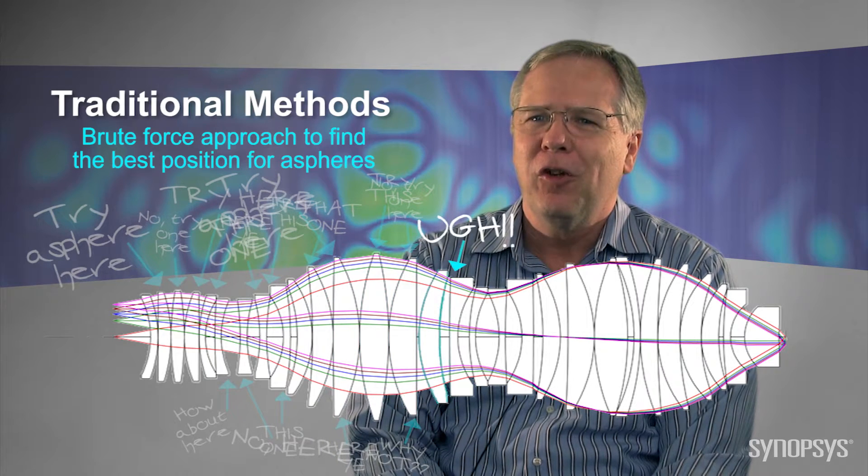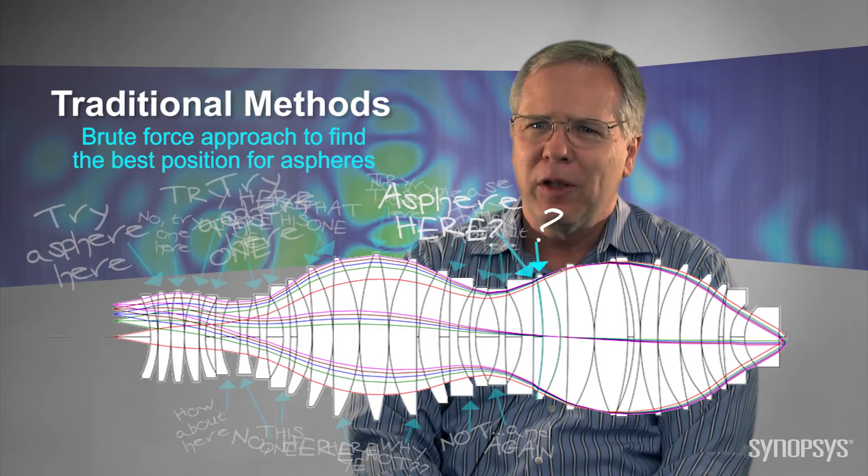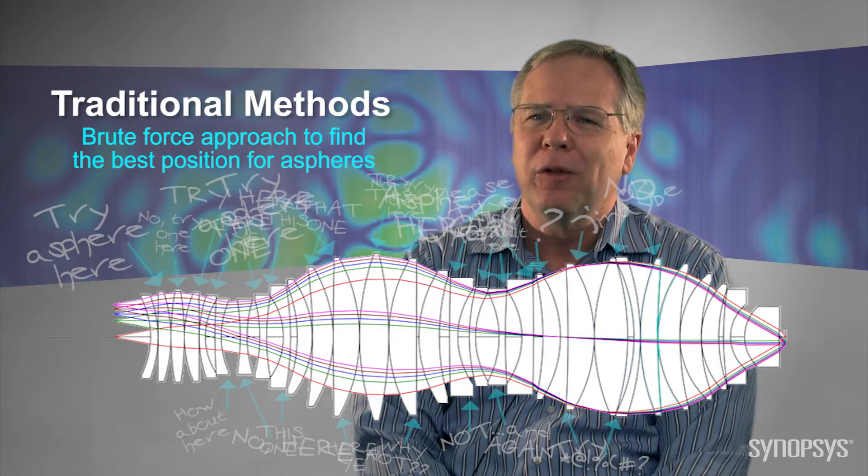And then when you get all done, you have to make a list of those and rank them, and then go back and put the asphere only on the best surface, and then repeat that process every time you want to add another one.